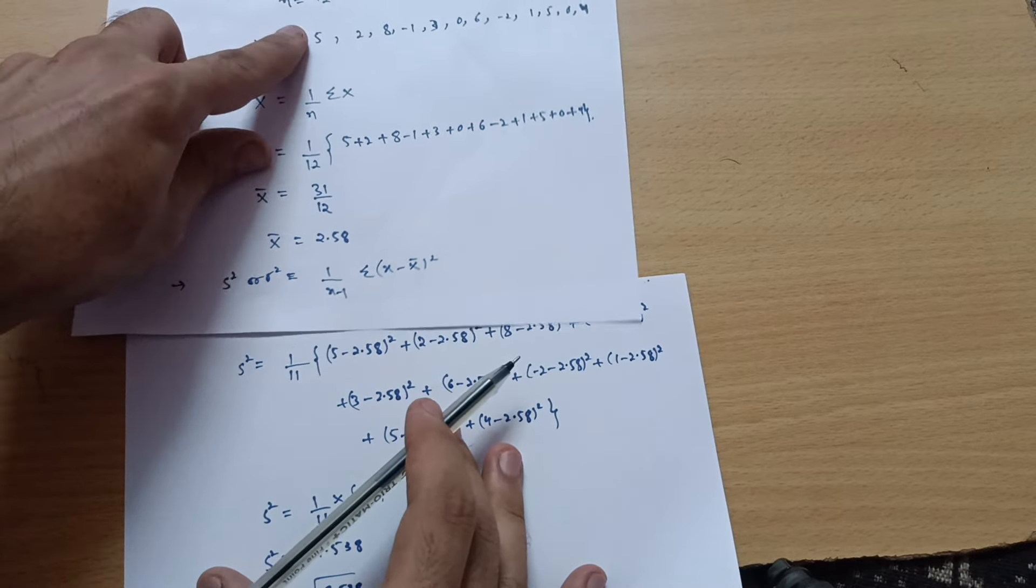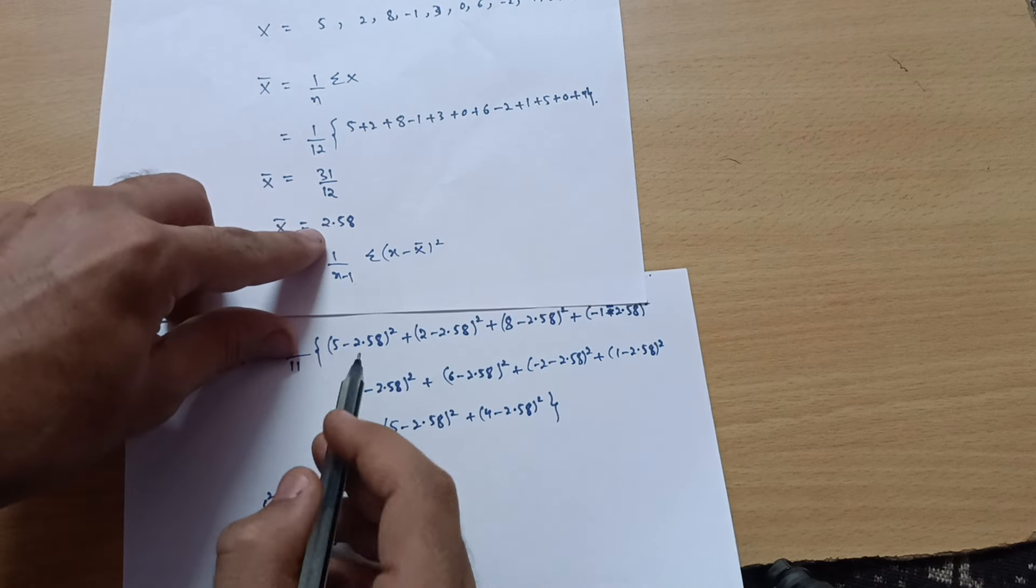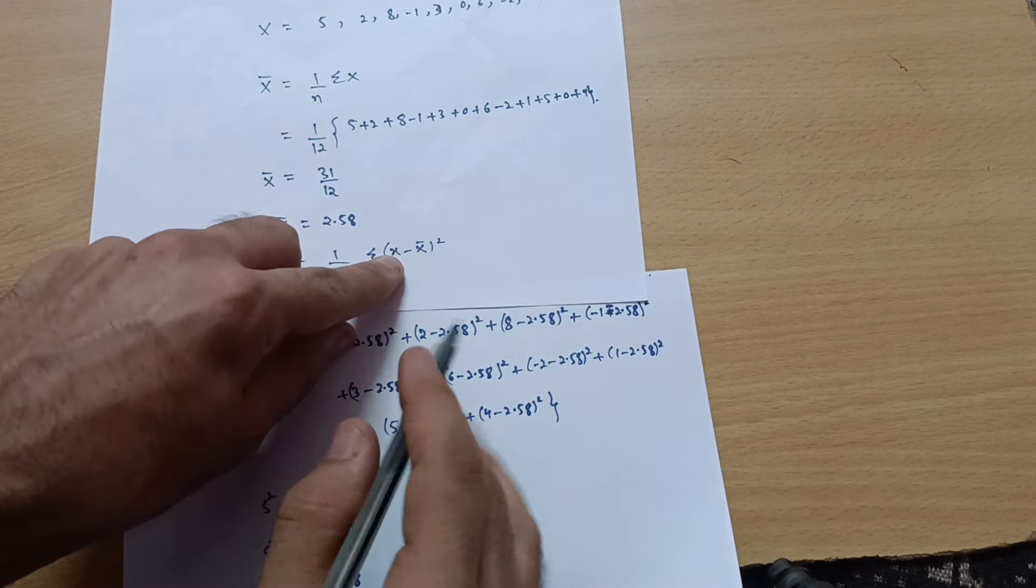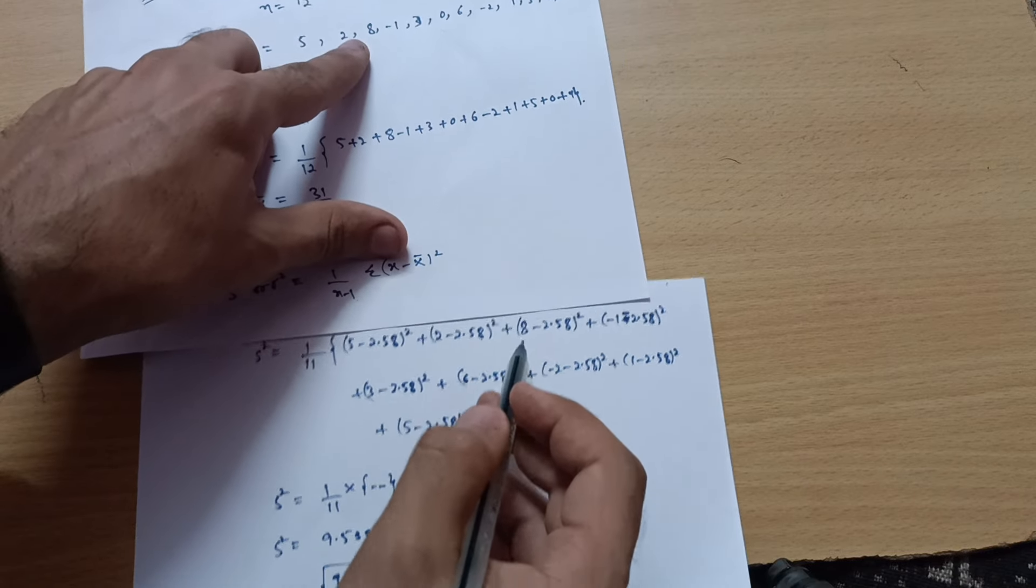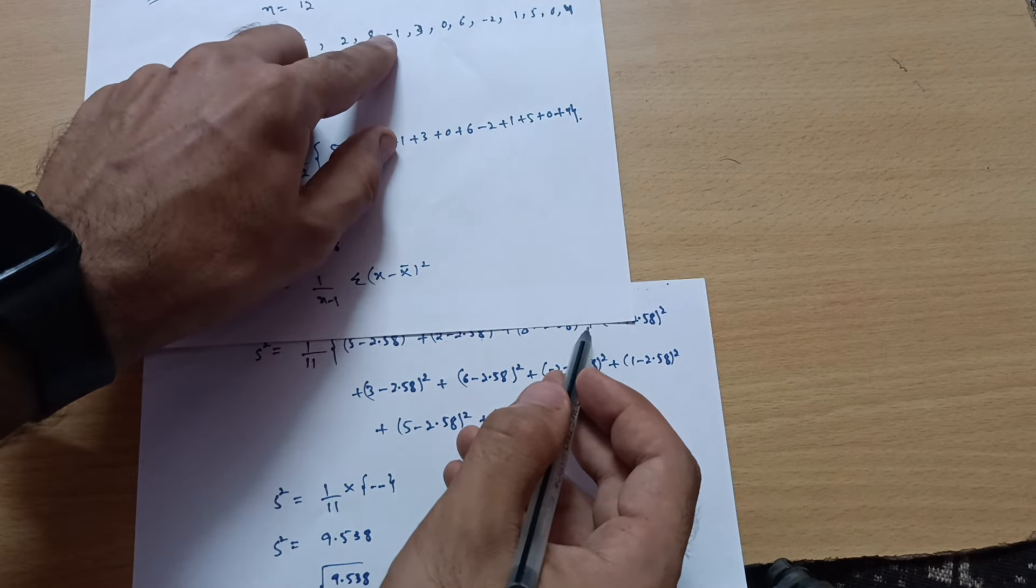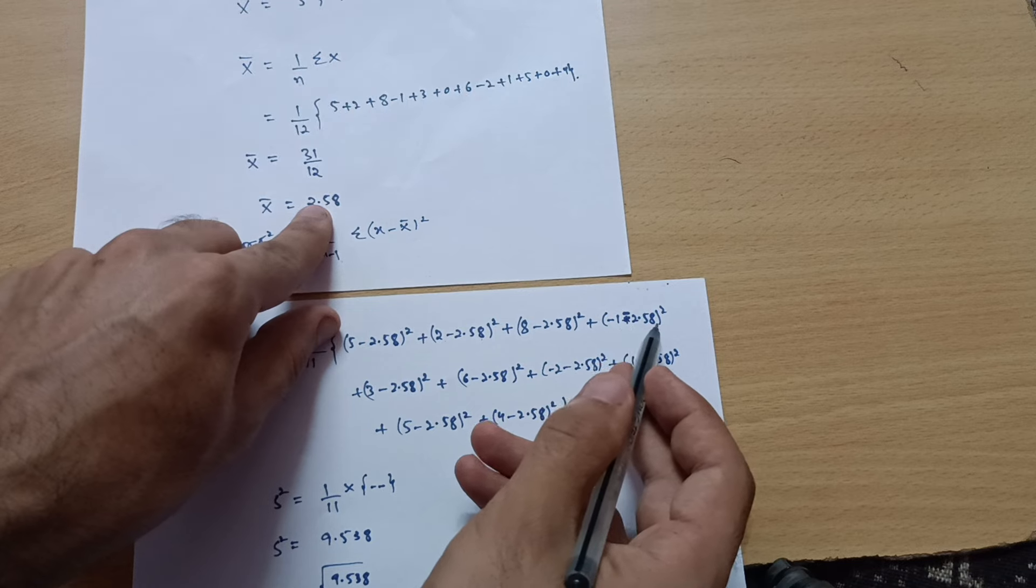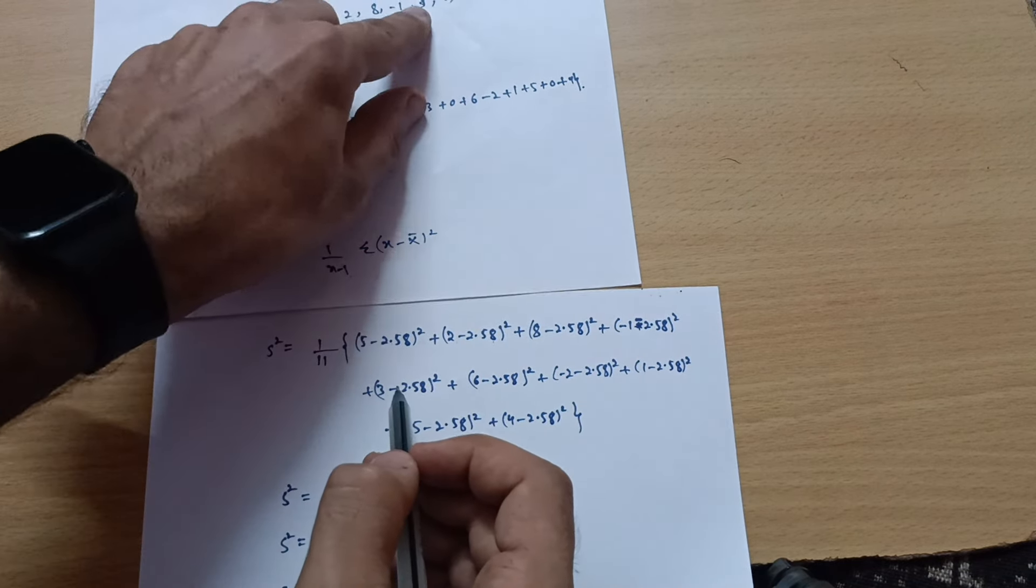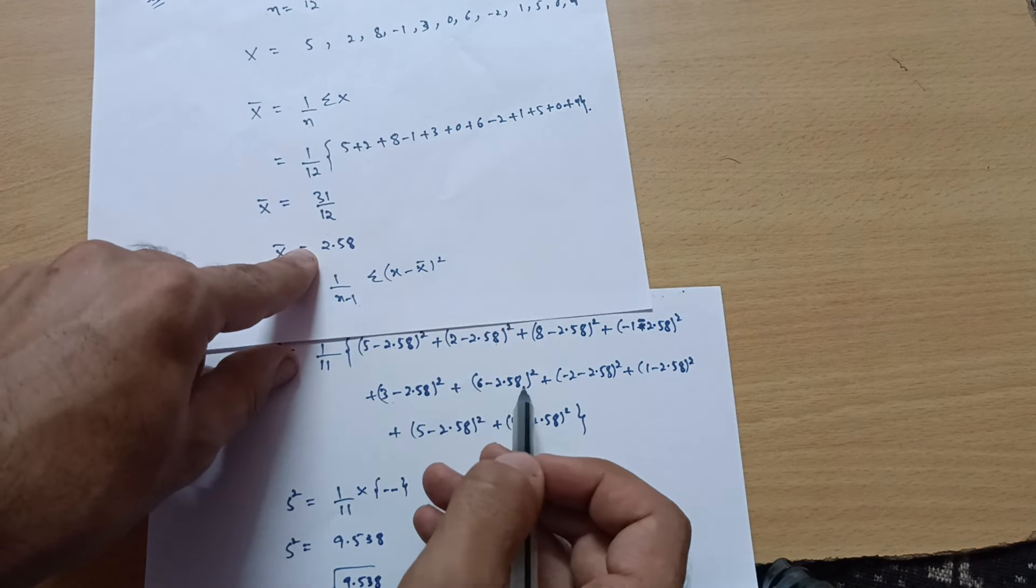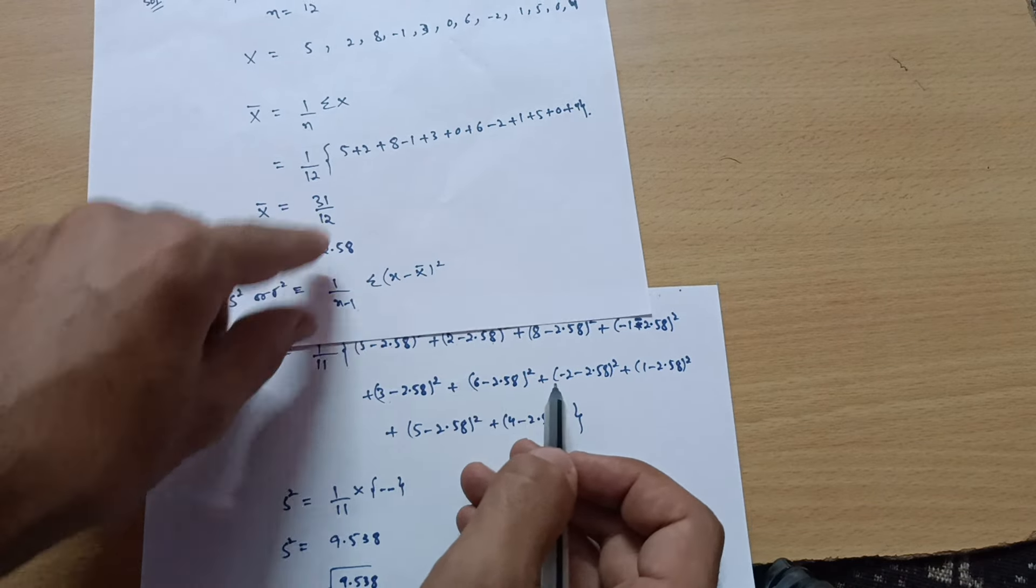Then summation of x minus x bar you have to take. We have the x values over here: 5 and x bar value is 2.58. So, 5 minus 2.58 whole square as it is in the formula. Then 2 minus 2.58 whole square, plus 8 minus 2.58 whole square, then plus minus 1 minus 2.58 whole square, plus 3 minus 2.58 whole square, plus 6 minus 2.58 whole square, plus minus 2 minus 2.58 whole square, then this one.